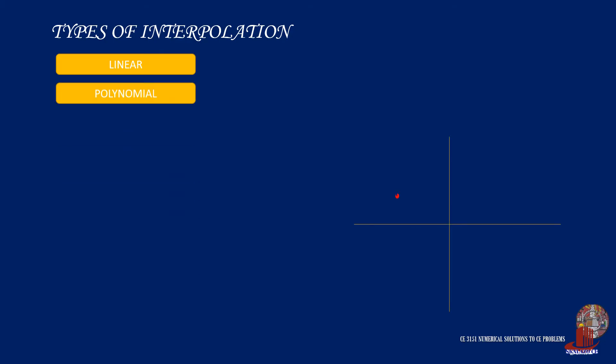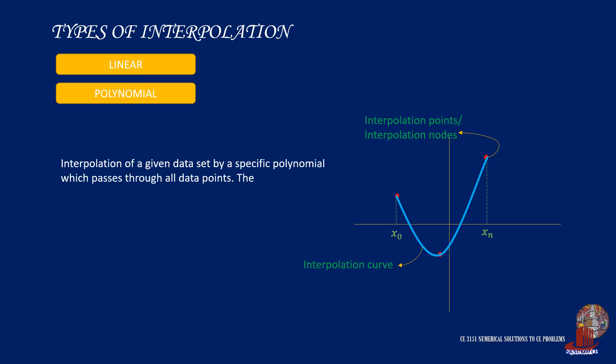Another type of interpolation is polynomial interpolation. With a few given points, a curve or lines are drawn out strictly passing each point. This is called the interpolating curve. Every point is considered an interpolation point or interpolation node, and the function, which would be a polynomial, is called the interpolating polynomial.